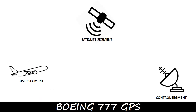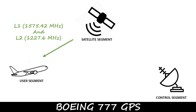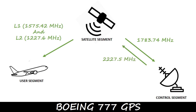The satellites transmit to the MMR in the airplane on the L1 and L2 frequencies. The L1 frequency is 1575.42 MHz and the L2 frequency is 1227.6 MHz. The satellites downlink satellite status data to the monitor stations on 1783.74 MHz, whereas the upload stations send information to the satellites on 2227.5 MHz.